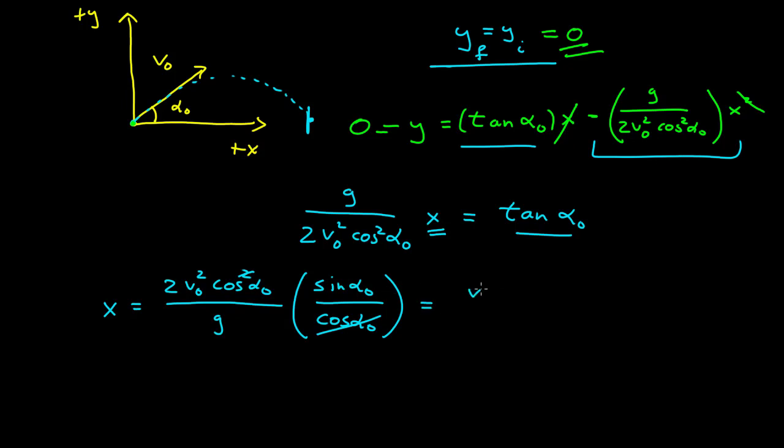And I'm going to rewrite this a little bit. Initial speed squared over g times 2 cosine alpha naught sine alpha naught. And this, if we remember our trig identities,